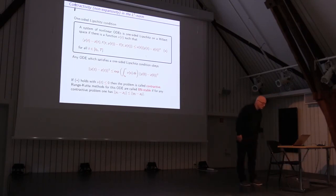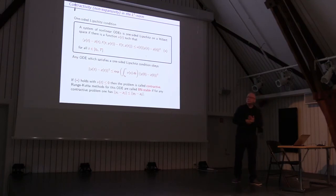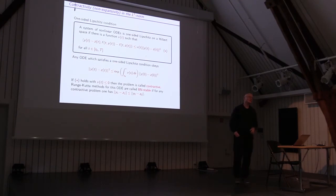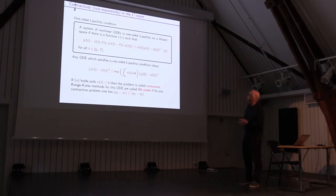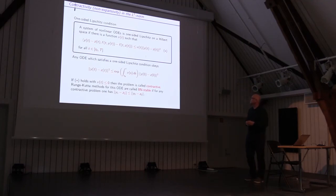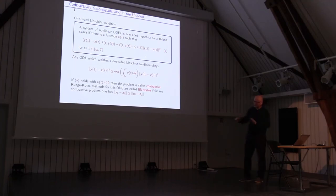What we have tried instead is to use the notion of contractivity — more correctly called non-expansiveness, but traditionally it is called contractivity in the ODE literature. If you can choose F in such a way that it satisfies a monotonicity condition for some inner product on your space, with a constant mu that can depend on time, then you will get this behavior of the norm of the solution. If you can manage to select your problem such that this mu can be taken non-positive, we call it contractivity — it should really be non-expansive, but okay.